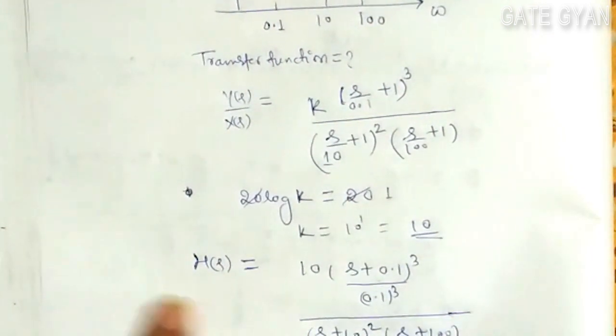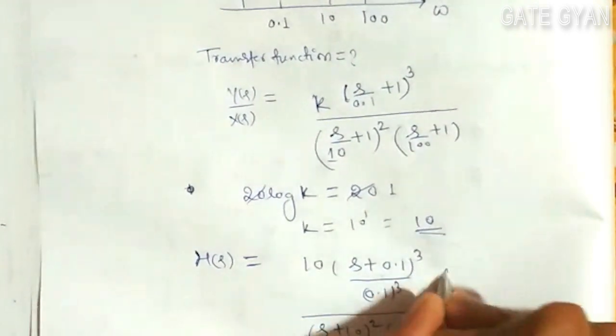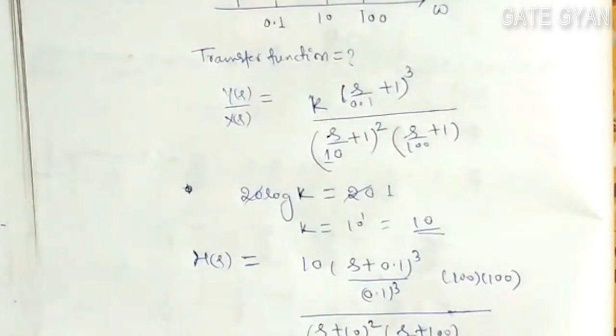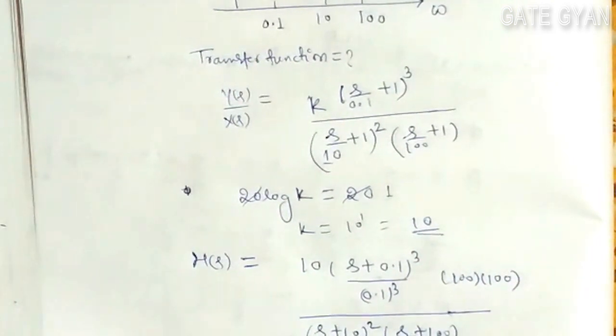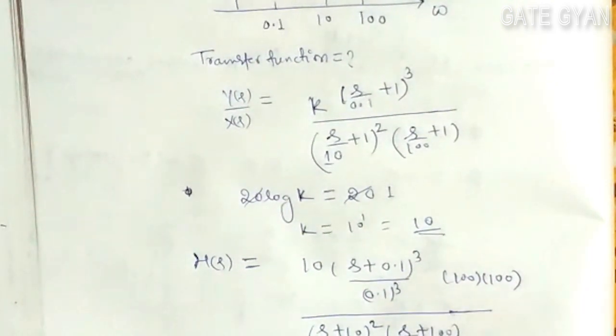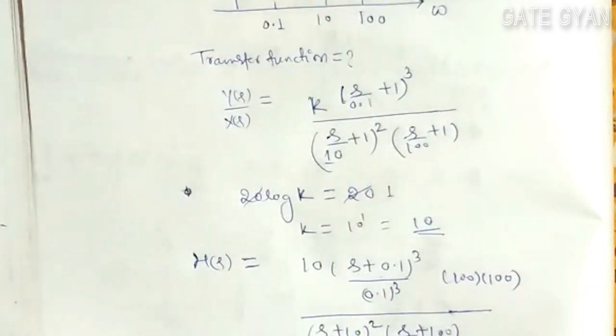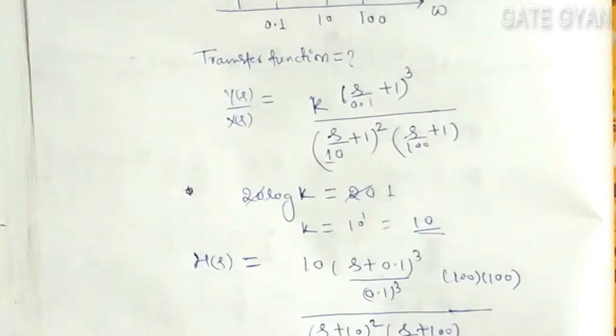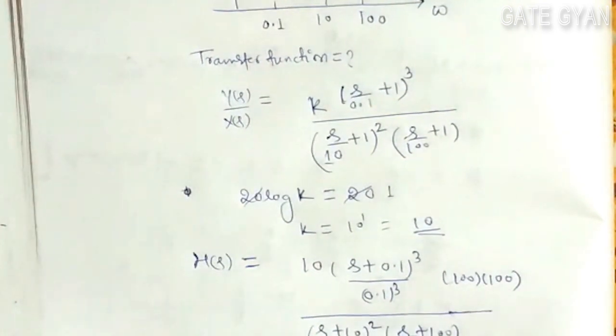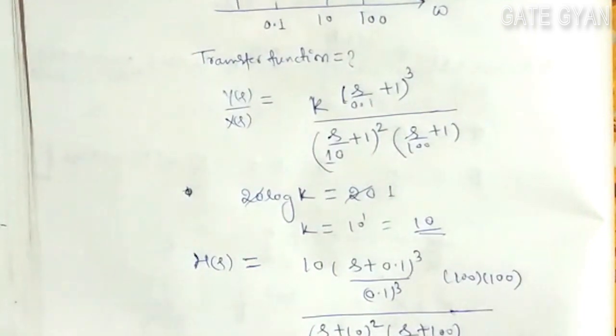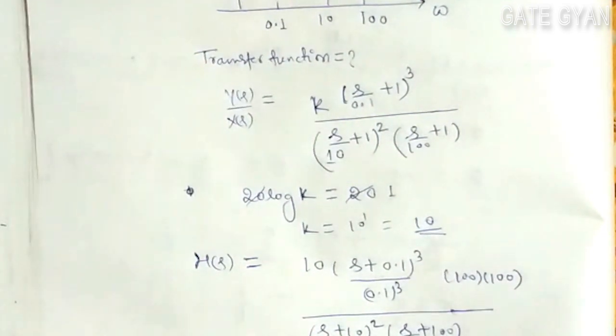And this 100 and 10 square, that is also 100, will come to this side. So, it is going to be 10 to the power 5 times (s + 0.1) cube, divided by (s + 10) square times (s + 100).